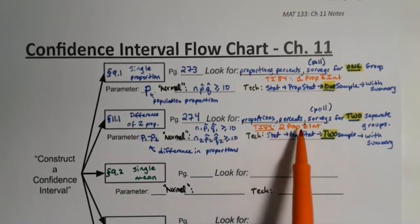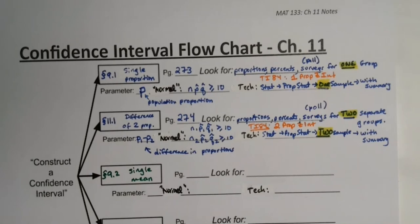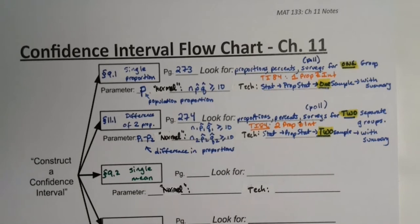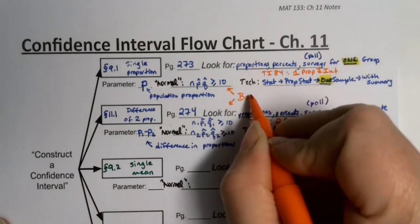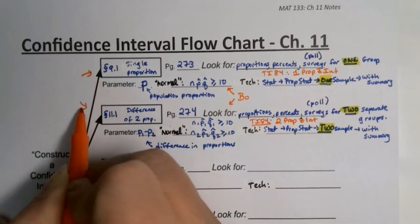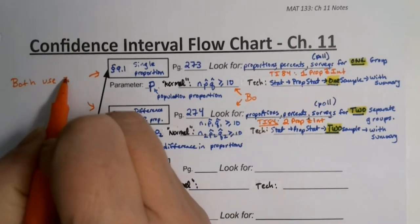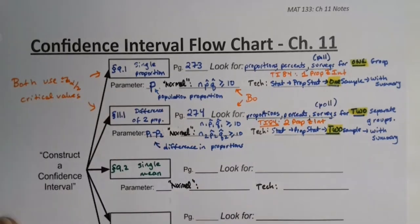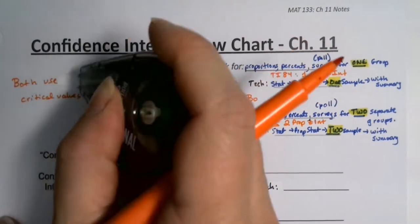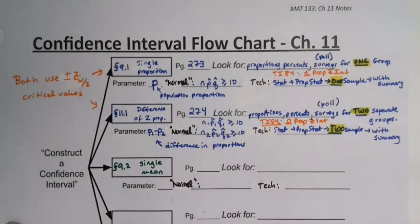Just a reminder: both proportion confidence intervals use critical z values — plus or minus z_α/2. That's because they're both proportions, and proportion confidence intervals use critical z values, as we learned in both chapter 9 and chapter 11.